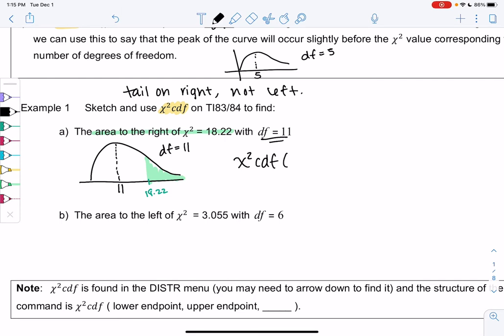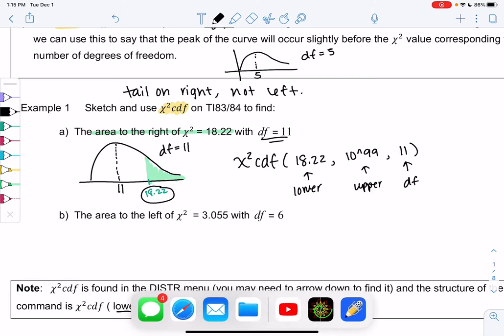So just like normal CDF and TCDF, we do lower comma upper. So my lower would be 18.22. Since we keep going forever, my upper will be 10^99, and then like the T curve, we have to add degrees of freedom, which is 11. We'll talk about how to find that later, but we'll know degrees of freedom for now.